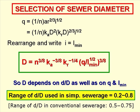To select the sewer diameter, we use Manning's flow equation and rewrite A and R in terms of KA times D squared and KR times D. Rearranging with little i equal to I min gives an expression for the sewer diameter. The sewer diameter depends on d/D as well as on the values of Q and I min. The range of d/D used in simplified sewerage is between 0.2 and 0.8, which is much greater than in conventional sewerage where it is restricted to between 0.5 and 0.75 — so we are using more of the hydraulic capacity of the pipe.